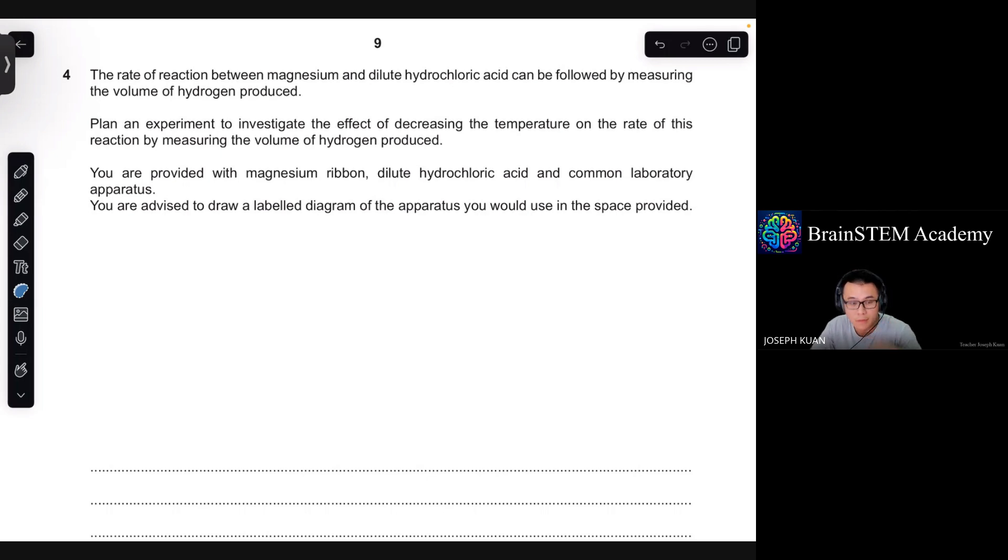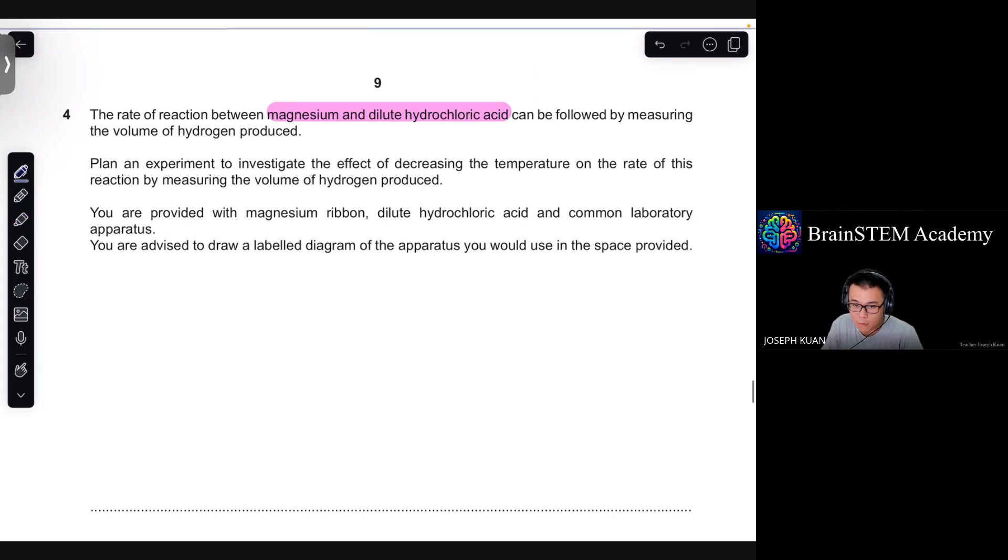So let's analyse this question. For the materials involved, magnesium is solid, which means that most likely you need to measure its mass in grams. And then dilute hydrochloric acid is actually a solution. So whenever you talk about solutions, you should think of concentration and also the volume. And then we also have the volume of hydrogen gas produced, which means that most likely you need a gas syringe.